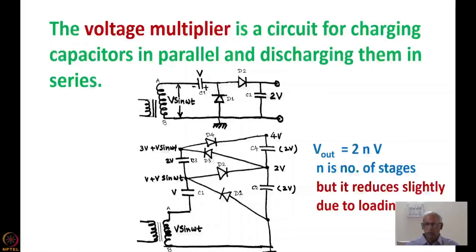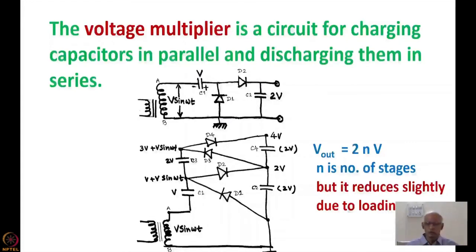But when it is connected to an accelerating tube, there will always be a current flowing, so the total voltage will be slightly reduced due to loading — that is, the ion current which is passing through the accelerating tube.